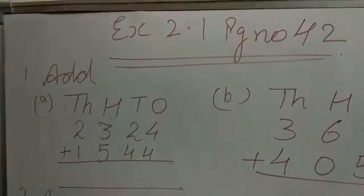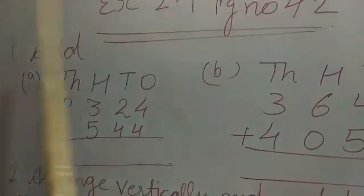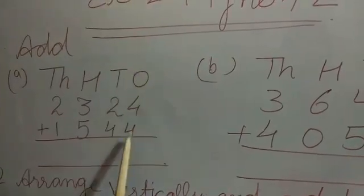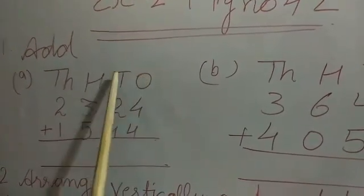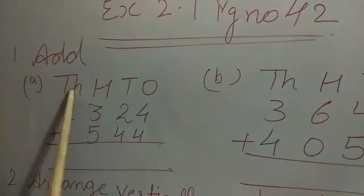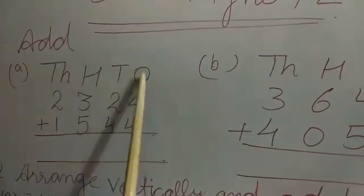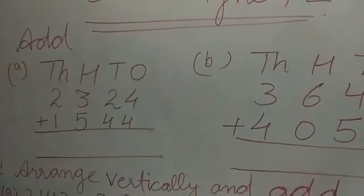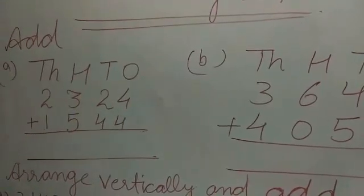So see, let us start from sum number A. This digit I have written is the 1s place, 10s place, 100s place, 1000s place. So firstly we add this 1s place. So 4 plus 4 is 8.